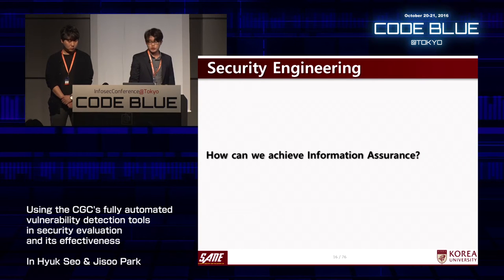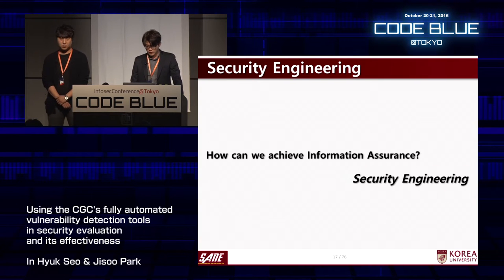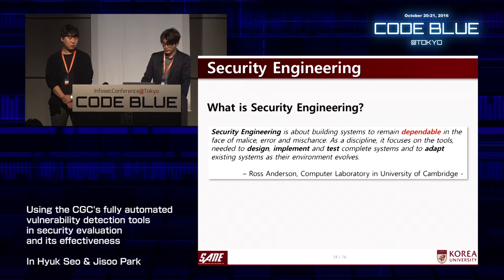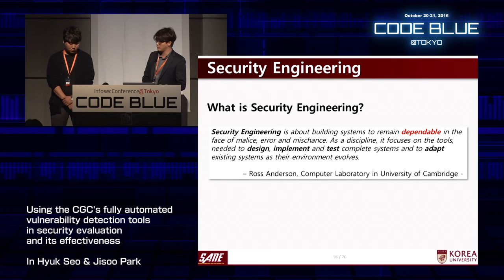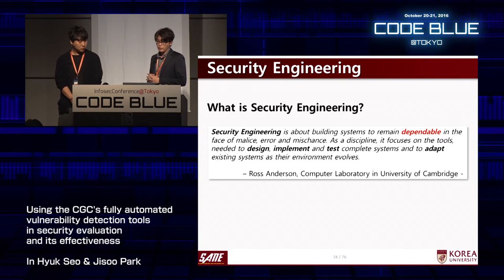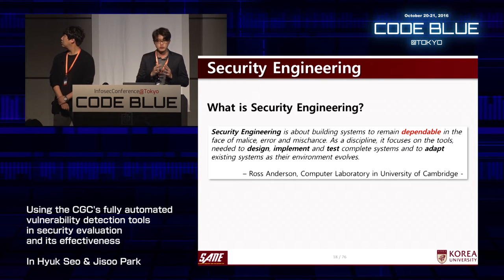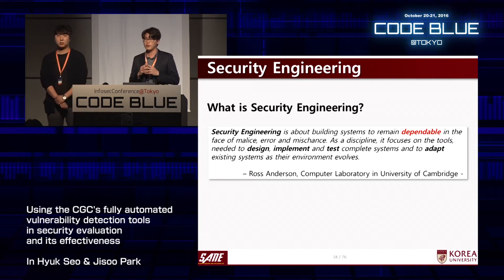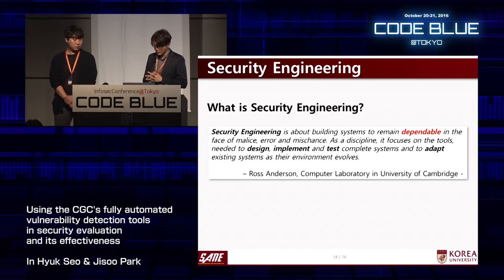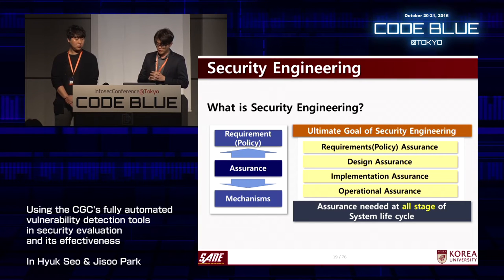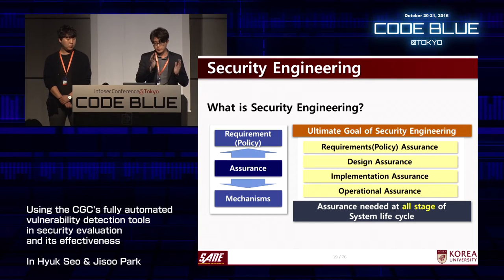How can you achieve information assurance? The answer is security engineering. Ross Anderson, professor at the Computer Laboratory of the University of Cambridge, defined security engineering in his book. Key concepts include: remain dependable, and the tools needed to design, implement, and test complete systems, and to adapt existing systems as their environment evolves. It means that all phases in the system life cycle must consider dependability.